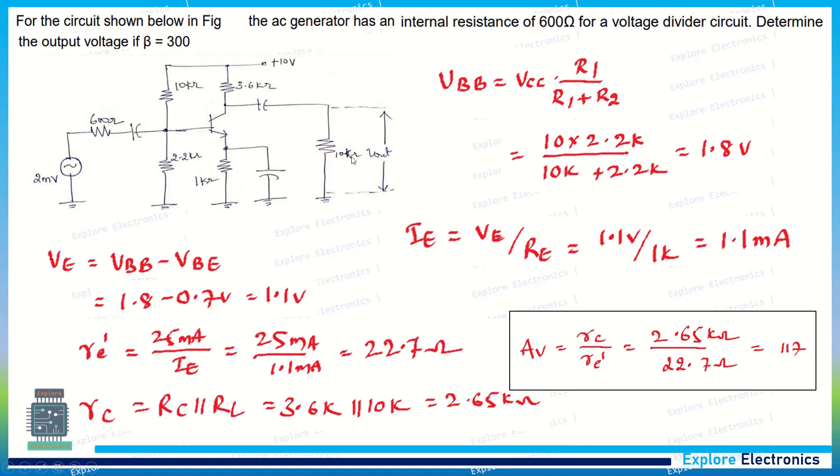RC can be calculated. The internal resistance at the collector terminal is RC parallel with RL. Here RL is 10k and RC is 3.6 kilo-ohms, which gives 2.65 kilo-ohms as RC.